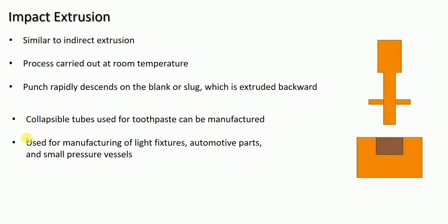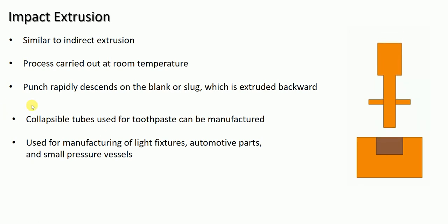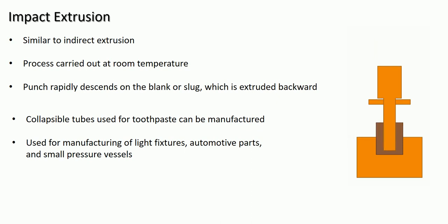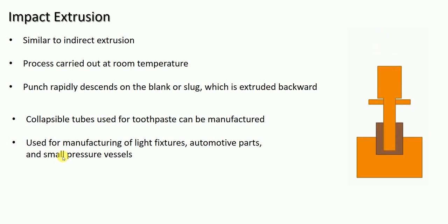This impact extrusion process is used for the manufacturing of collapsible tubes — such as toothpaste tubes that we see in our day-to-day life. Those are manufactured with the help of the impact extrusion process. It is also used for manufacturing light fixtures, automotive parts, and small pressure vessels.